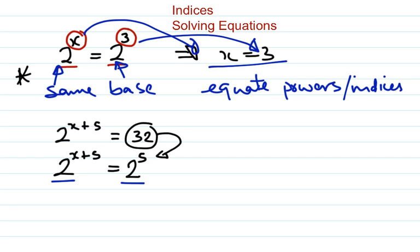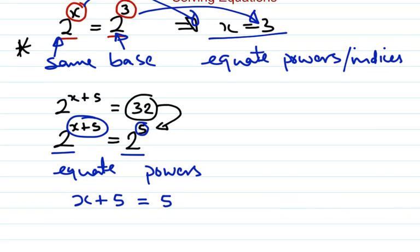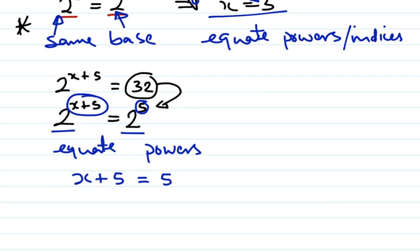Now, now that I've got the same base on both sides, I can now equate the powers. And remember what I said equating the powers mean. So equate powers. And all I'm going to do is just take the powers off the top. So I take the x plus 5 off the top, and put it equal to the 5 that's at the top of the 2. So I've just basically taken all these powers off the top there. And then I'm going to solve. Solving algebraically, bringing that 5 over, making it negative. x is going to be 5, take away 5, which is 0. So therefore, x is equal to 0. And that is the solution of that.